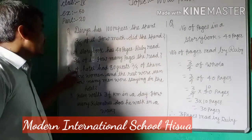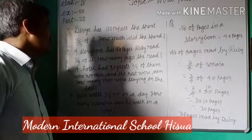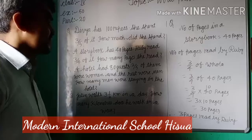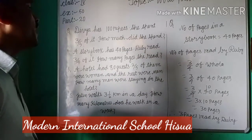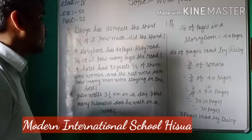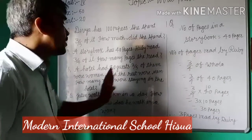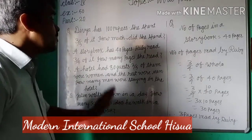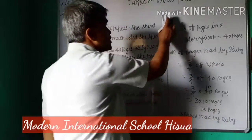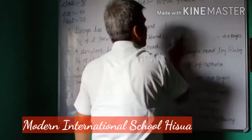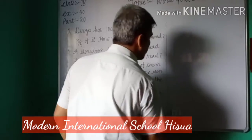A hotel had 80 guests. 2 by 5 of them were women, and the rest were men. How many men were staying in the hotel? So dear students, now solve this question.